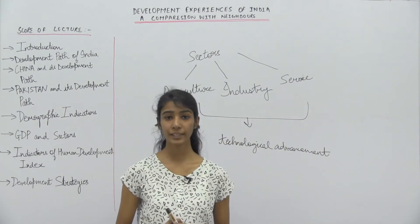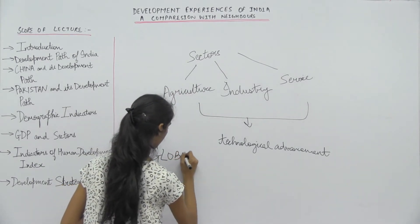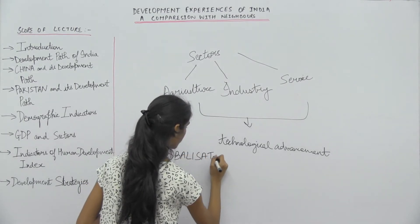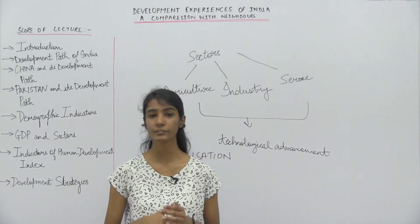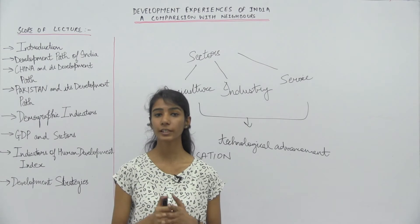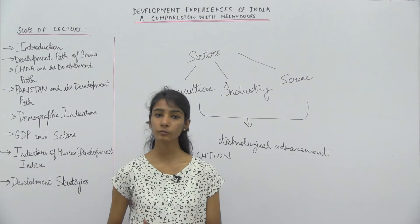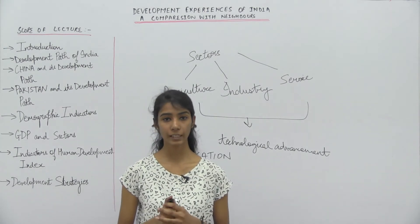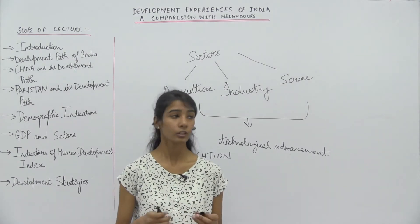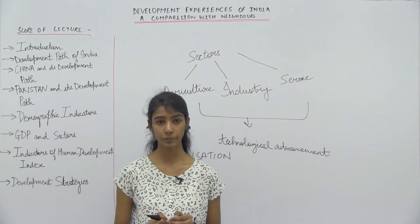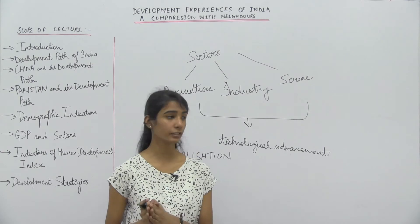Local advancement is possible due to the process of globalization. Globalization — you all must have studied in previous chapters. What does globalization mean? It is the process which connects the economy of one country with the world economies. Through globalization, the boundaries between countries were erased, and countries formed some regional and economic groupings such as SARC, European Union, ASEAN, G8, G20, etc.